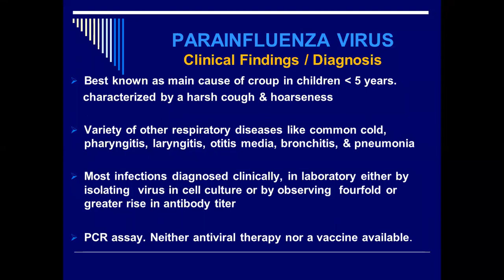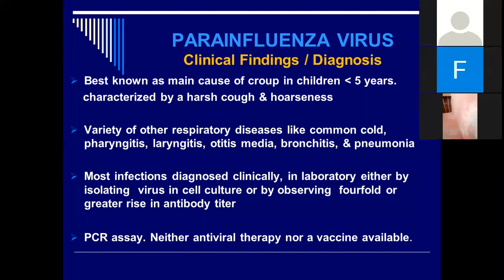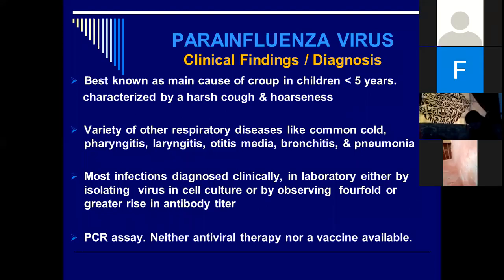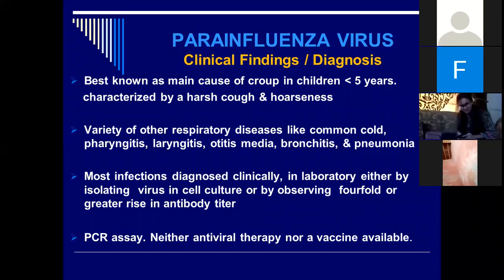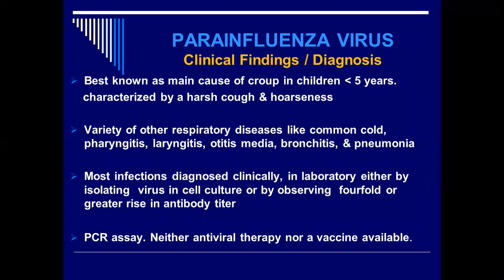Looking at clinical findings and diagnosis, the parainfluenza virus is best known as the main cause of croup in children under five years of age. Whenever you have children less than five years with a barking cough, laryngitis, tracheitis, and bronchitis, these are almost certain signs of parainfluenza infection — what we call croup.